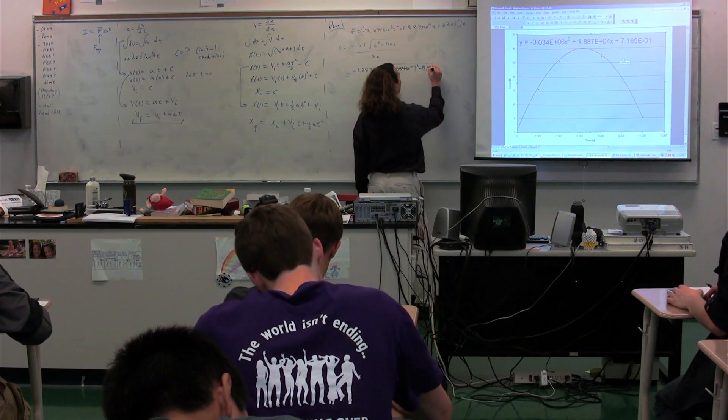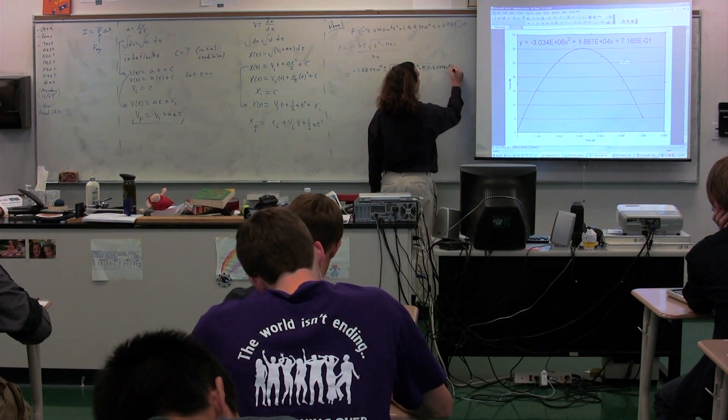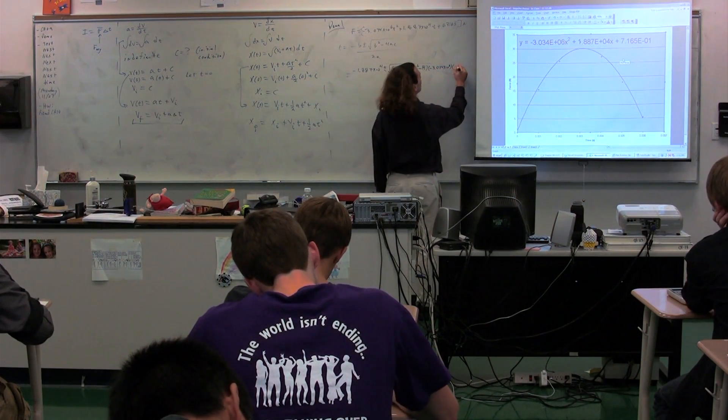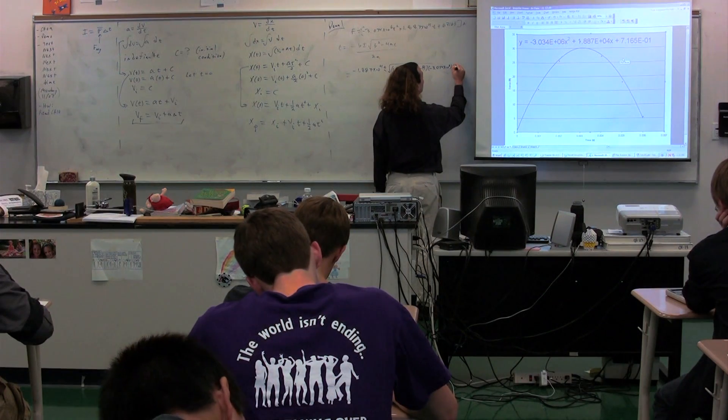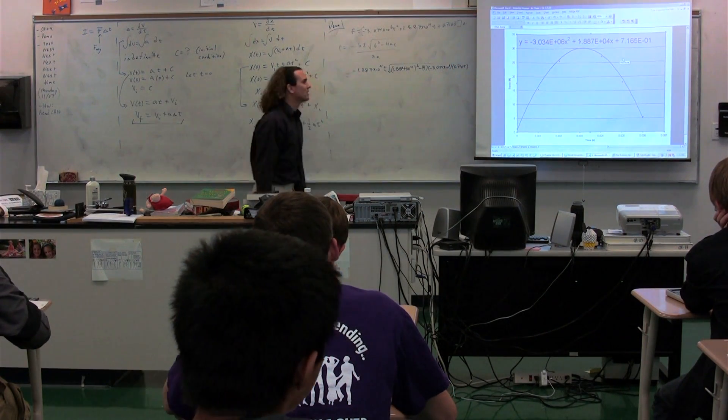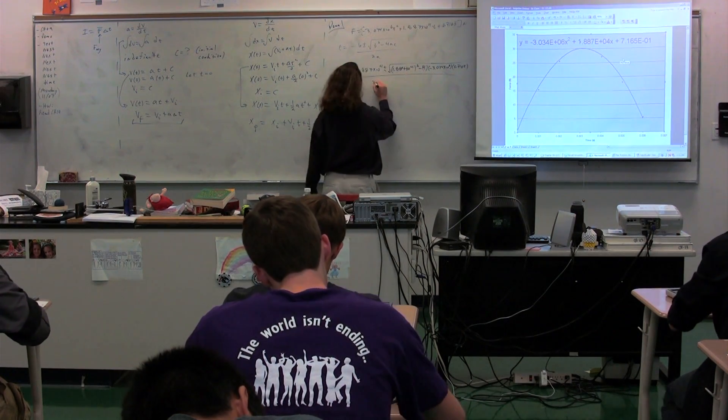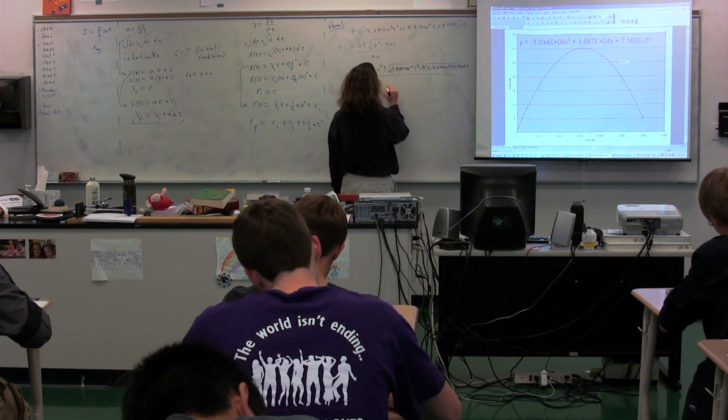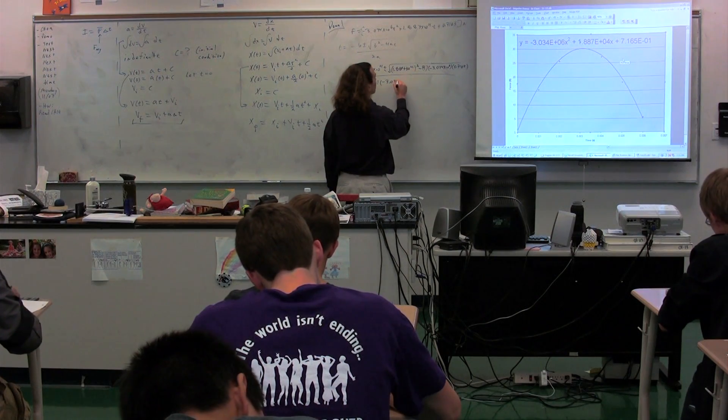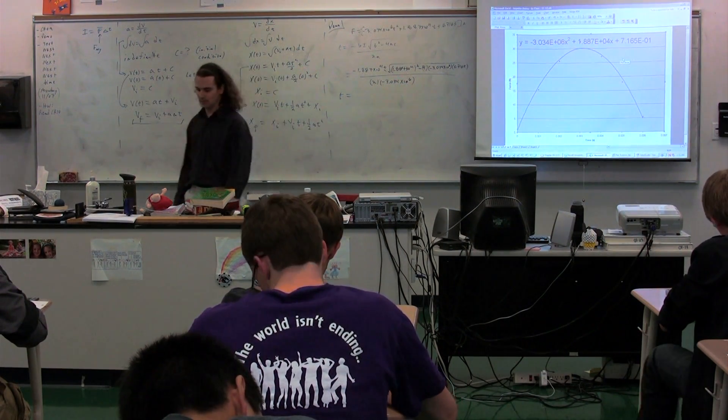Okay. Going to A. Yeah. Negative 3.034 times 10 to the 6th. Times C. C is 7.165 times 10 to the negative 1. Right, so 0.7165. All, and then we take the square root of 2 times A, which was negative 3.034 times 10 to the 6th. I need to know what t is equal to, plus and minus, please.